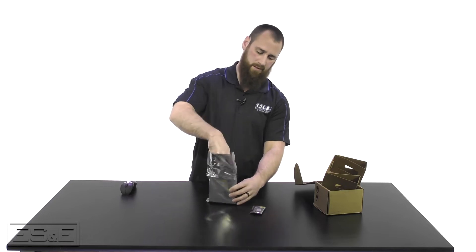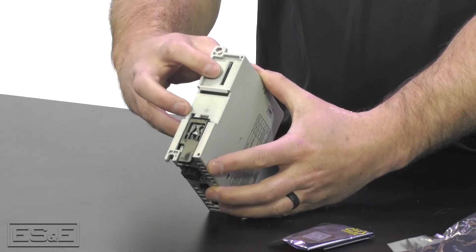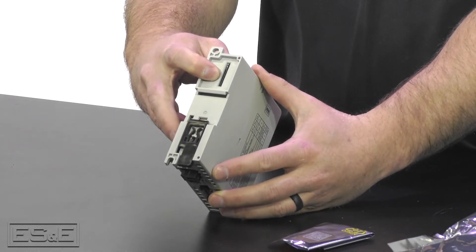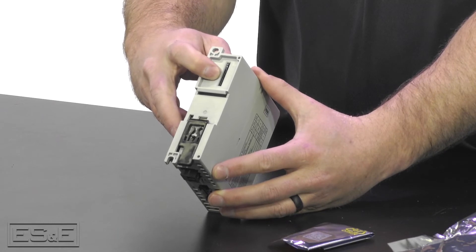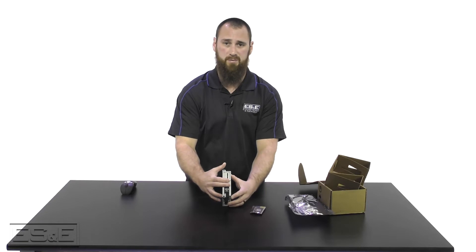On our NAT-R module, on the back side of the module itself is the slot for the SD card. You cannot access the SD card when the module is attached to a DIN rail.